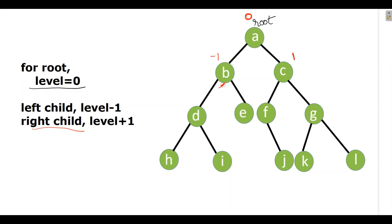For B, D is on the left side so it will be minus two. For E, it will be minus one plus one, so zero. For F, it is on the left side: one minus one equals zero. G is two. For H: minus two plus one equals minus one, as it is a right child. E doesn't have any child. F has a right child, so zero plus one equals one. For K: two minus one equals one. For L: two plus one equals three.